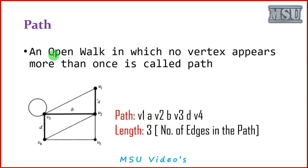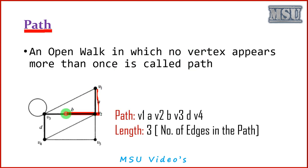A path must be an open walk in which no vertex is allowed to appear more than once. In a normal walk, no edges are allowed to appear more than once, but in a path we add the restriction that no vertices may repeat either. For example: starting from v1, visiting v2 via edge a, then v3 via edge b, then v4 via edge d. The length of this path is 3, indicating the number of edges — a, b, and d.